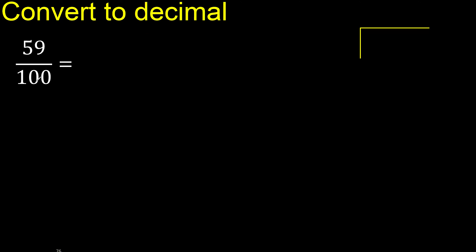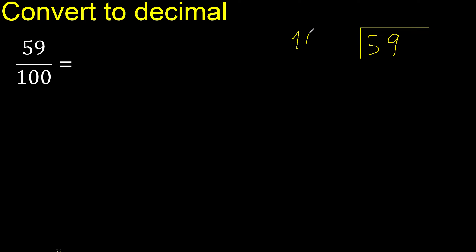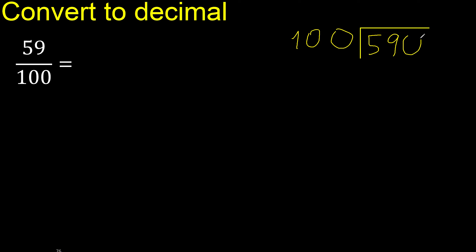59 divided by 100. 59 is less, therefore complete — always complete with 0. Here: 0 point.